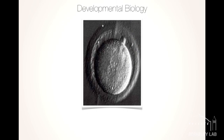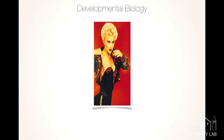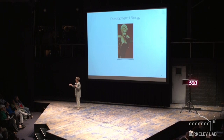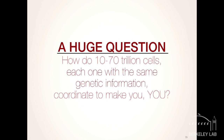So the sperm — one of them finally hits the egg. It's now a fertilized egg. Now, imagine how many cells this woman has in her body. She came from a single cell with the same genetic information. Does anybody want to guess? 10 to 70 trillion cells in her body — more than the national debt of the US and Europe put together. And they all have the same genetic information.